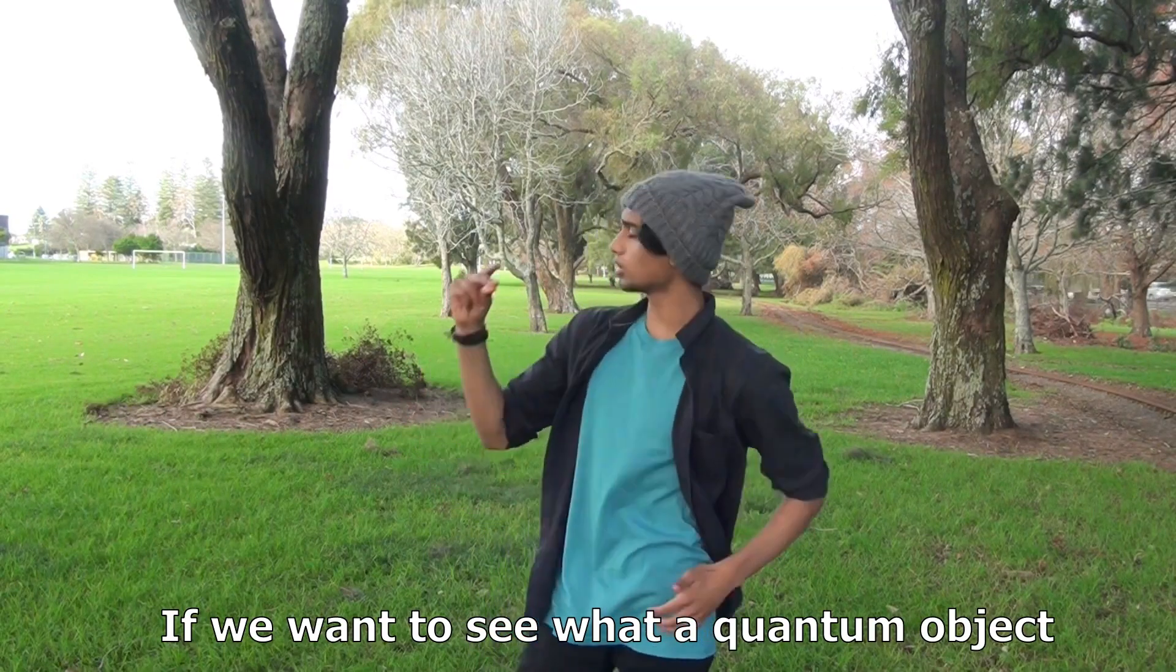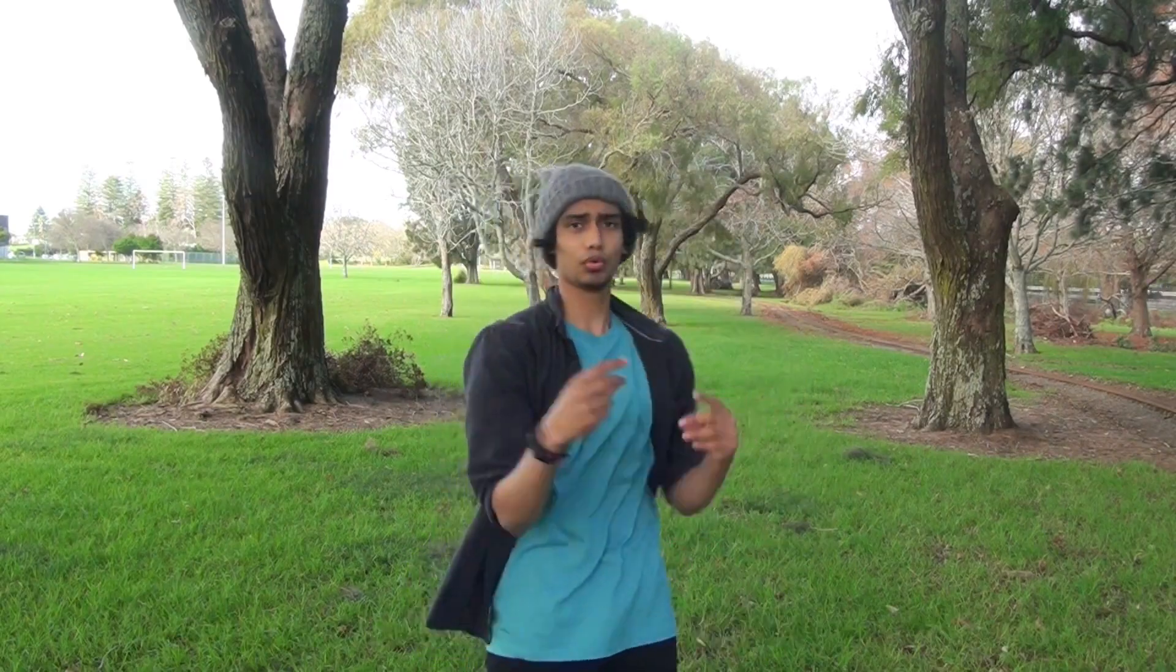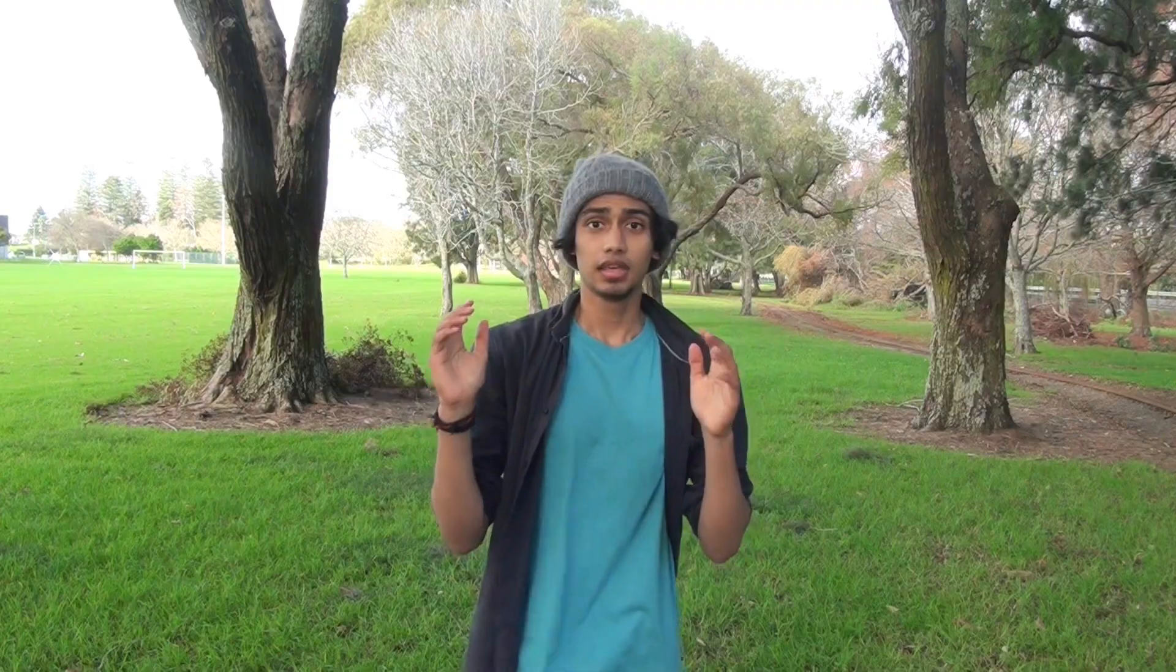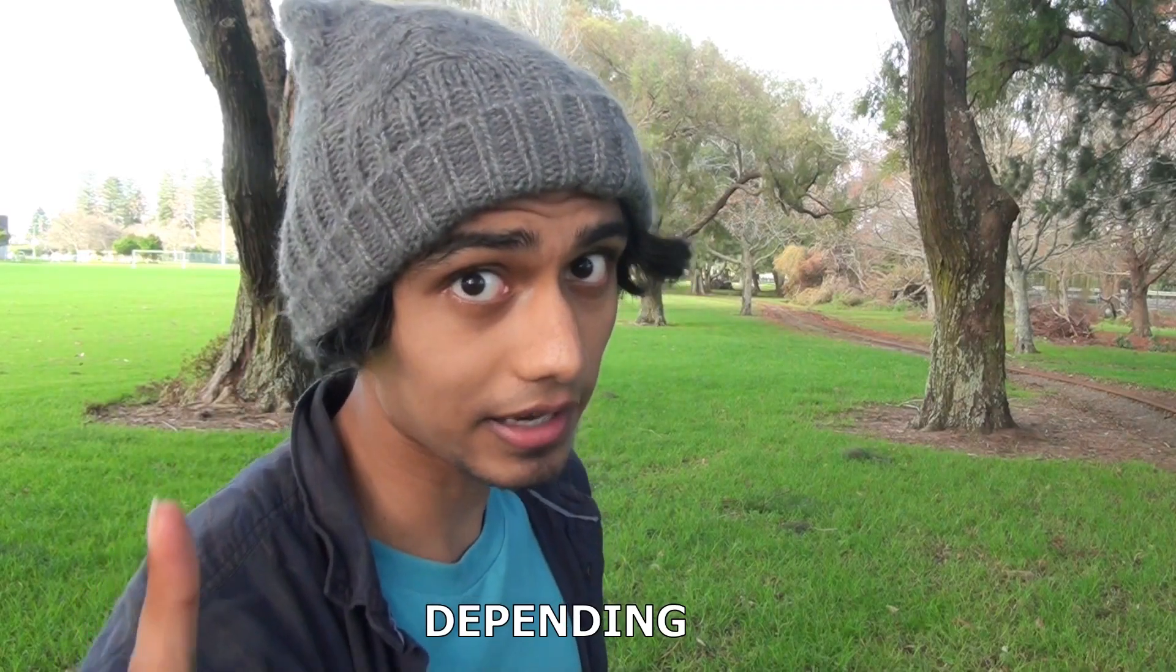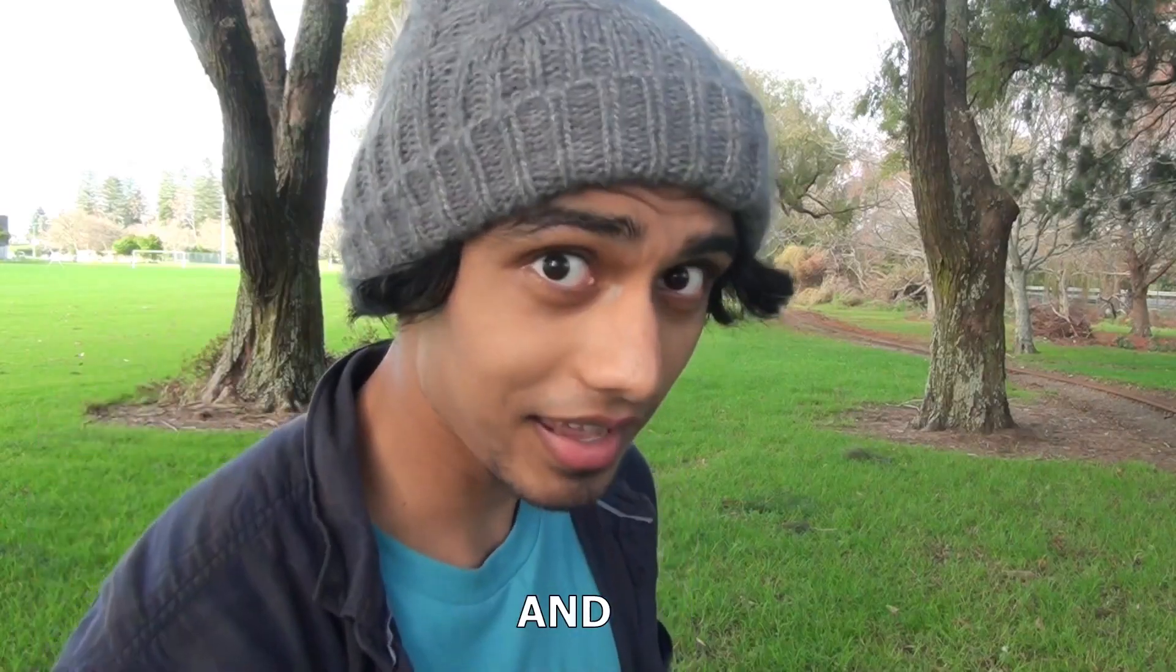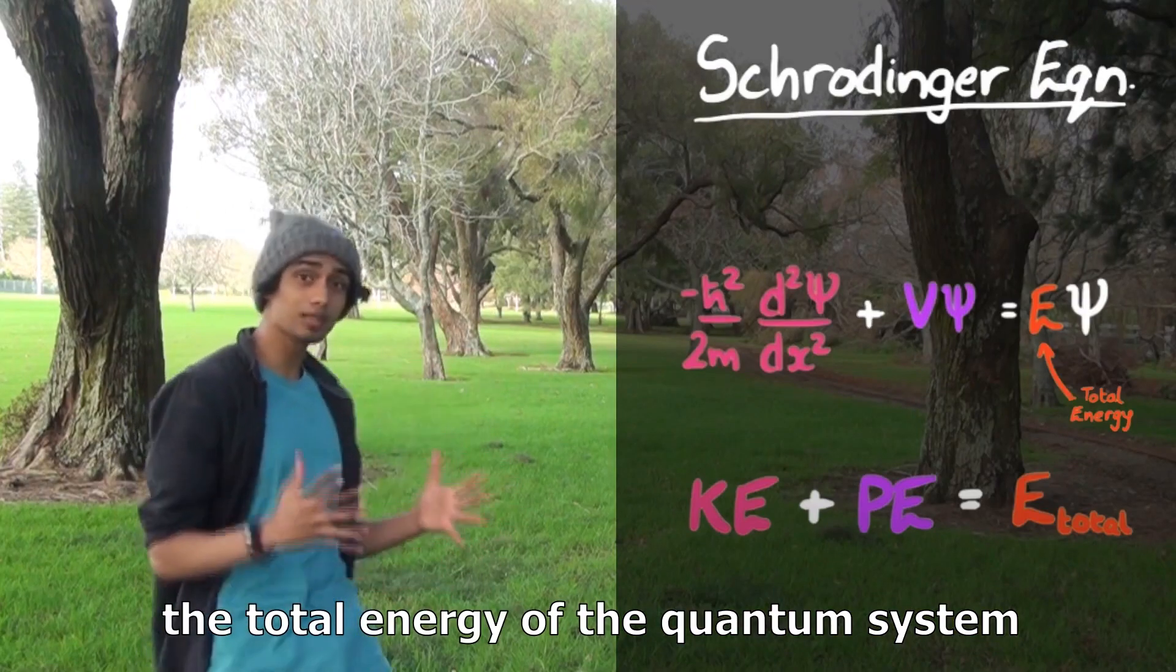So if we want to see what a quantum object will do in the future, we need the Schrodinger equation. In it, the wave function is changing with time in a very specific way, depending on these constraints and the total energy of the quantum system.